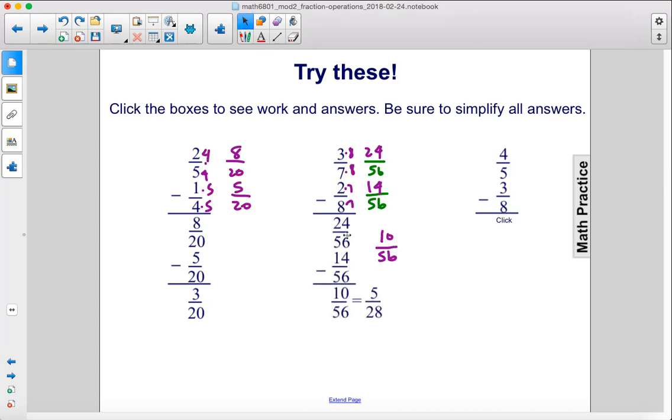Let's see the work here. So we end up with 10 over 56, which when divided by 2—you divide the numerator by 2 and the denominator by 2—you get 5 over 28.